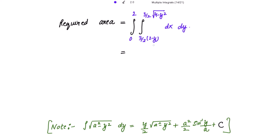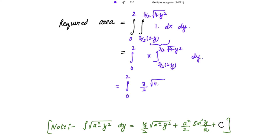First integrating the innermost integral: the integration of 1 is x, evaluated between the limits (3/2)(2 − y) and (3/2)√(4 − y²). This gives the integral from 0 to 2 of [(3/2)√(4 − y²) − (3/2)(2 − y)] dy. Taking (3/2) as a common factor outside the integral.